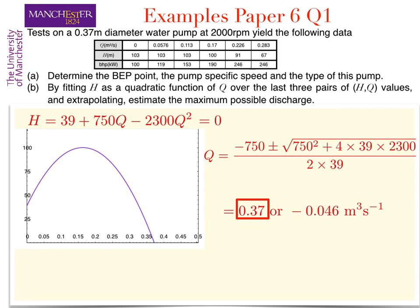Since only a positive flow rate is sensible, the optimum flow rate here is 0.37 cubic meters per second.